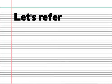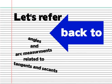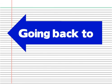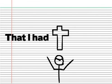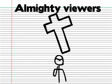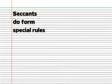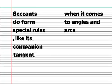Let's refer back to angles and arc measurements related to tangents and secants. Going back to secants, I will confess that I had sinned before you, almighty viewers. I lied. See, secants do form special rules, like its companion tangent, when it comes to angles and arcs.